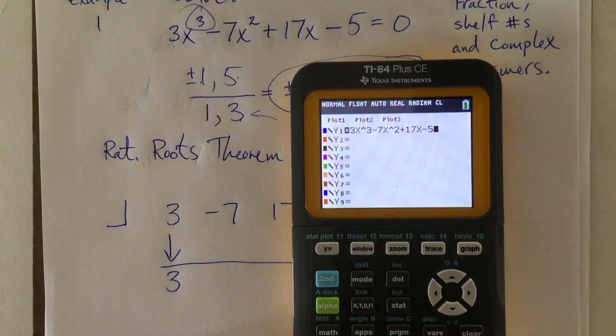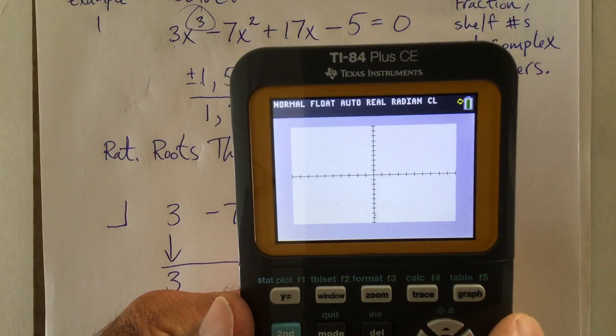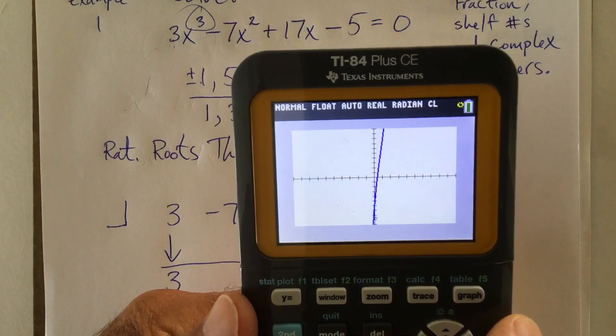And here we go. I'm going to hit graph. So here, I'm going to get a little closer so it's a lot. There we go. Let's see what it looks like. And remember, if you forgot to zoom standard last time, you're in trouble.